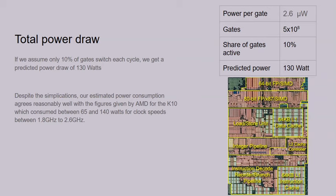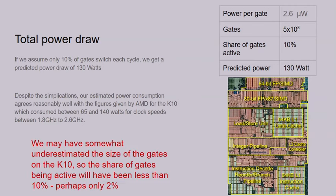So that seems to give you a pretty reasonable estimate. We may have somewhat underestimated the size of the gates on the K10. I was still going on what I'd learned in my VLSI classes, which allowed you to assume that the area of a gate was going to be roughly the same as lambda — the smallest feature size of a technique. If that's not the case, the gates would actually have been larger. Apparently on modern 7 nanometer processes, they are larger than 7 nanometers. So if we allow for that, perhaps it was only 2%.